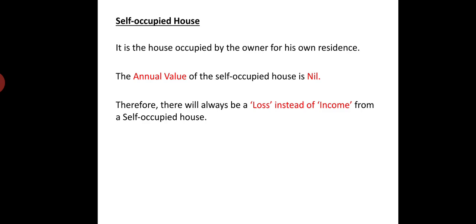The definition related to the theory: a self-occupied house is a house occupied by the owner for his own residence. The annual value of the self-occupied house is nil — that is a very important point. We don't have to let out the house. Self-occupied house valuation is comparatively easier because the annual value is nil, so there is no need to calculate GAV.